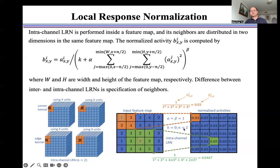For example, if K is 0, N is 2, and alpha-beta is 1, for the intra-channel local response normalization, we use 4 units to calculate the normalized activity B for the edge unit. For the inner unit, we use 9 units to calculate the normalized activity B.